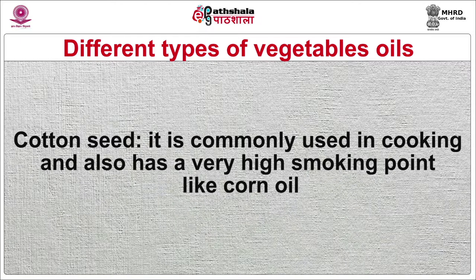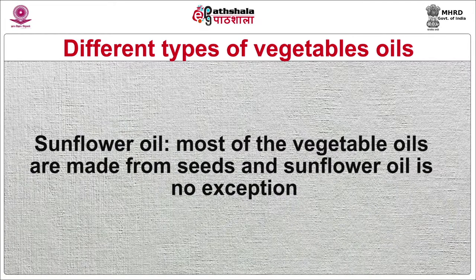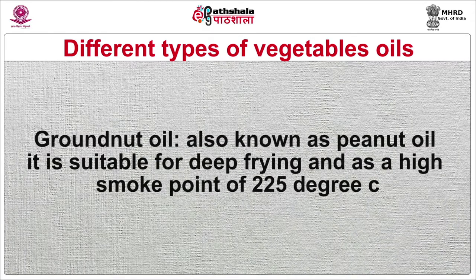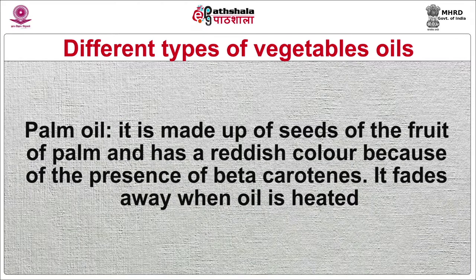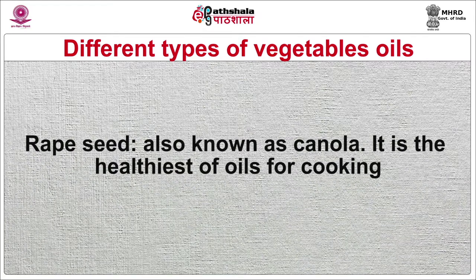Sunflower oil — most vegetable oils are made from seeds and sunflower oil is no exception. Ground nut oil, also known as peanut oil, is suitable for deep frying and has a high smoking point of 225°C. Palm oil is made from the seeds of the fruits of the palm and has a reddish colour due to the presence of beta carotene, which fades away when the oil is heated. Rapeseed oil, also known as canola, is the healthiest of oils for cooking. Olive oil is made from olives and commonly used in Mediterranean countries; it has a low smoking point of 165°C and hence is not suitable for deep frying.